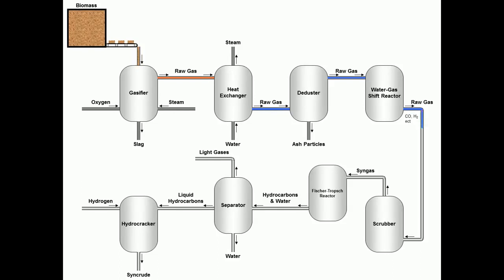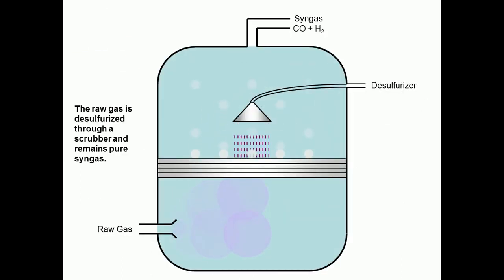The raw gas is then sent to a scrubber. In the scrubber, the raw gas is desulfurized and purified to a mixture of carbon monoxide and hydrogen. It is traditionally called syngas.